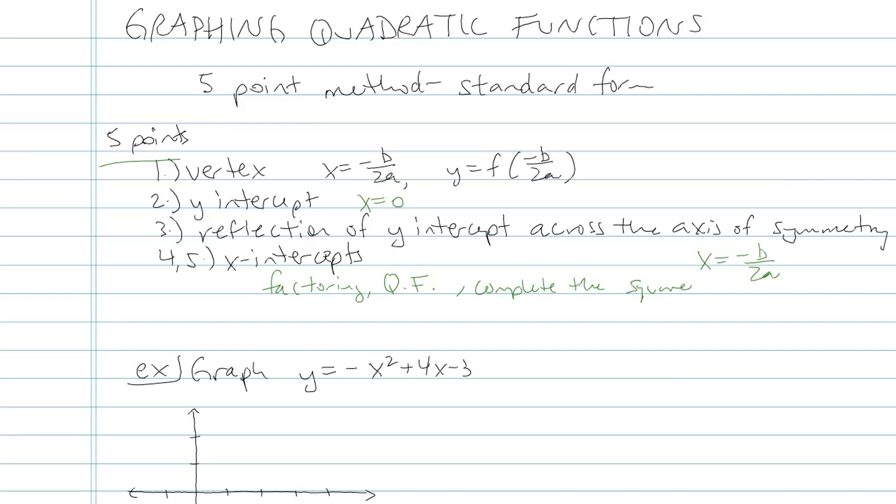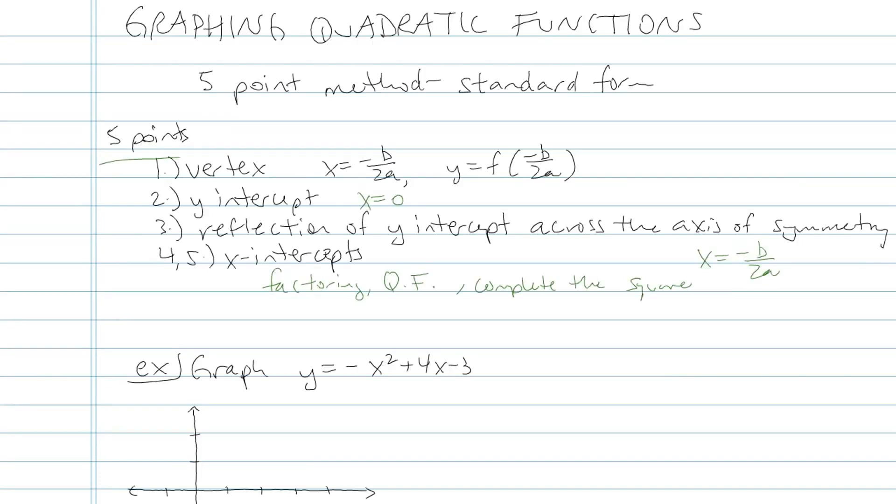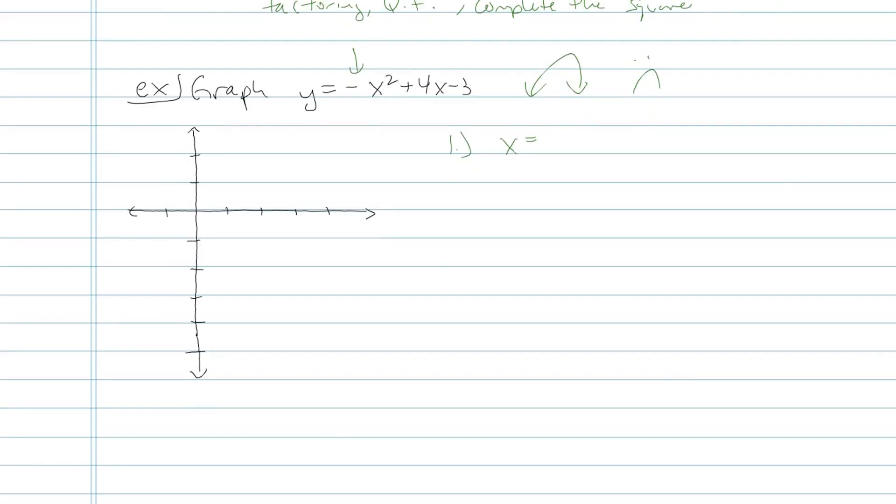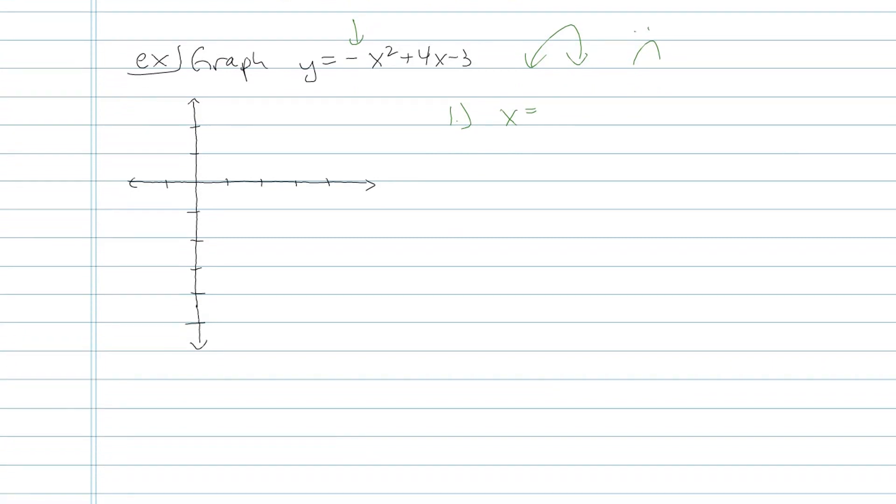So we're going to go ahead and get started. First thing it says graph y equals negative x squared plus 4x minus 3. Before we do anything else, I notice this leading coefficient number is negative. That tells me this parabola is sad. It's a sad face. It opens upside down. Negative opens upside down. That's how I personally remember it. I want to keep that in mind as I find point 1, the vertex.